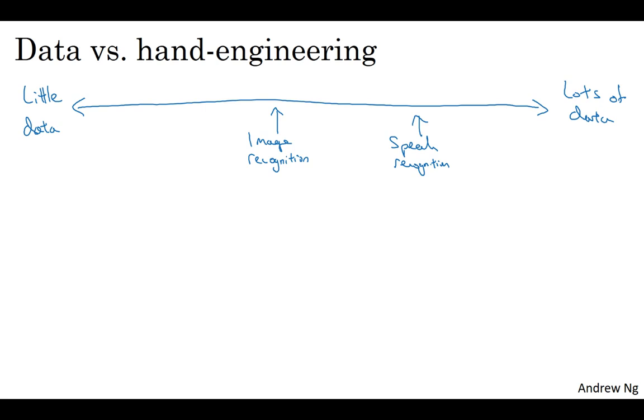because image recognition is just a complicated problem, to look at all those pixels and figure out what it is, it feels like even though the online datasets are quite big, like over a million images, it feels like we still wish we had more data. And there are some problems like object detection, where we have even less data.